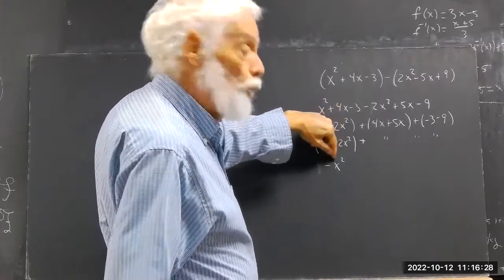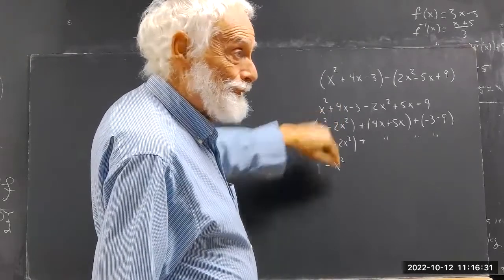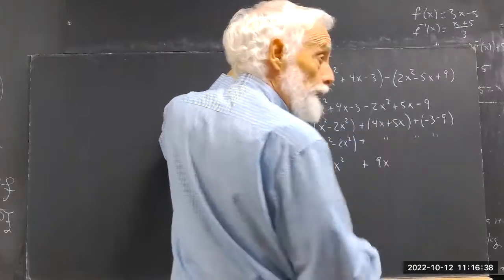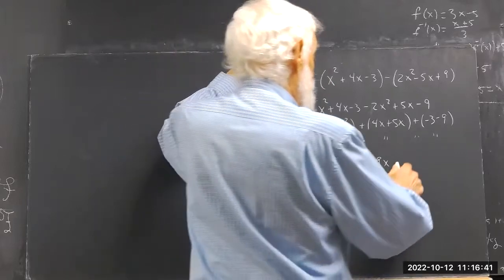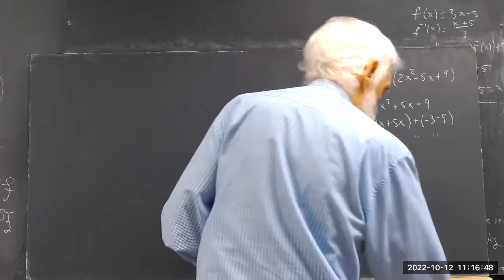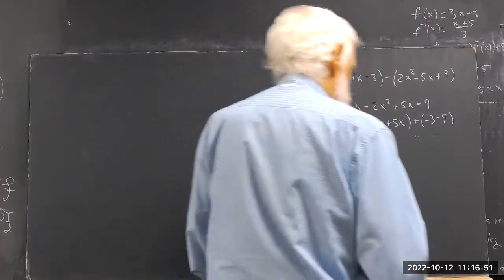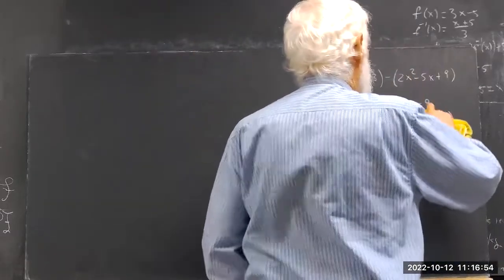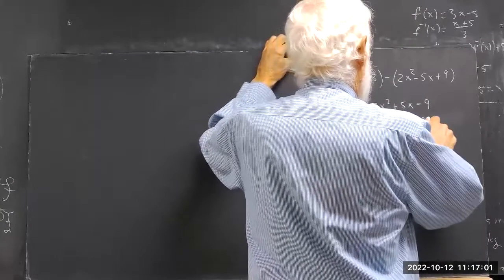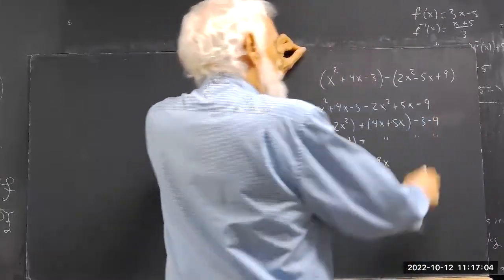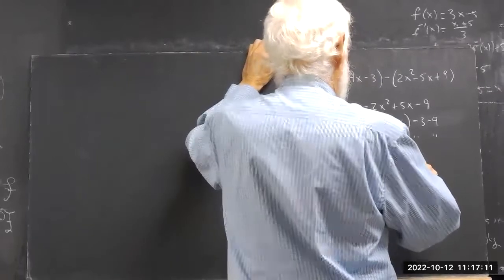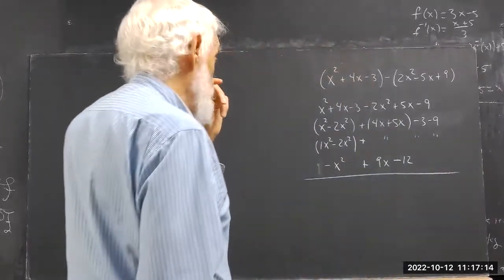Now 4x and 5x makes 9x, because 4 of something plus 5 of the same thing makes 9 of them. And then we have negative 3 and negative 9 — wait, negative 3 and negative 9 add up to negative 12. So there we got it.